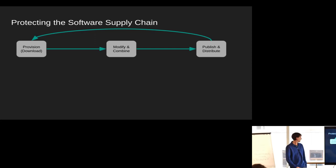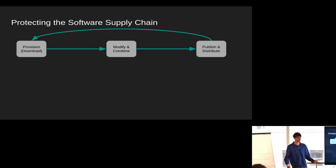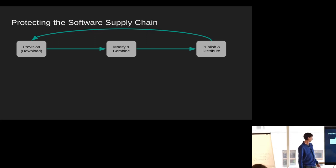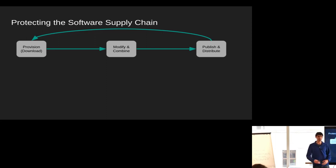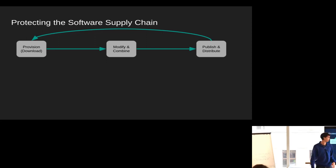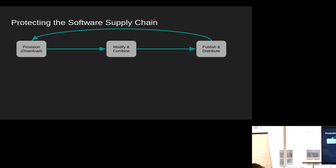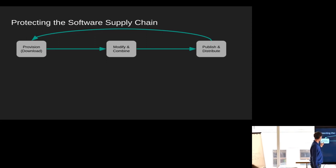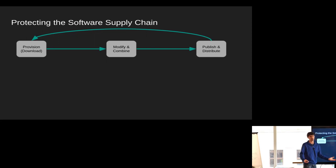Starting with the software supply chain: we can basically break it down into three main steps that happen whenever you're building software. We provision that software from somewhere, usually downloading the source code or something like that. We modify and combine it — this could be compiling, linking in libraries, things like that. And then we take the outputs of that and we publish, distribute, or generally make them available for other stages. This happens over and over again until we get the final thing we want.